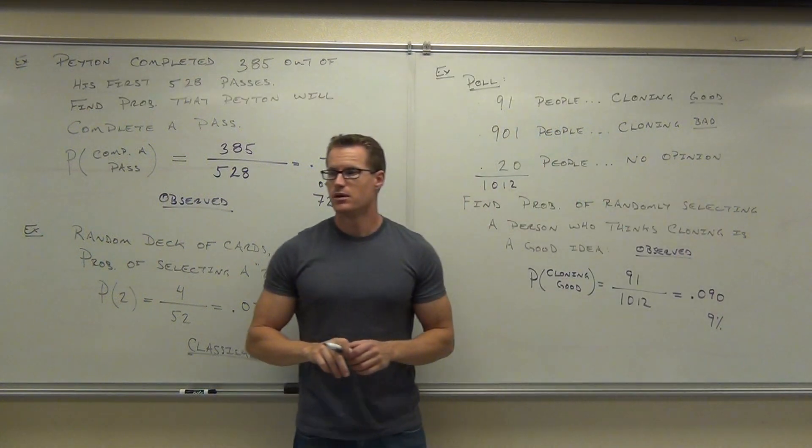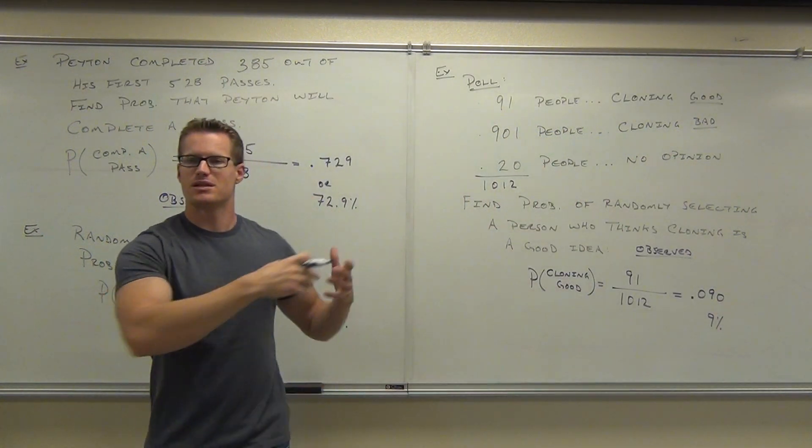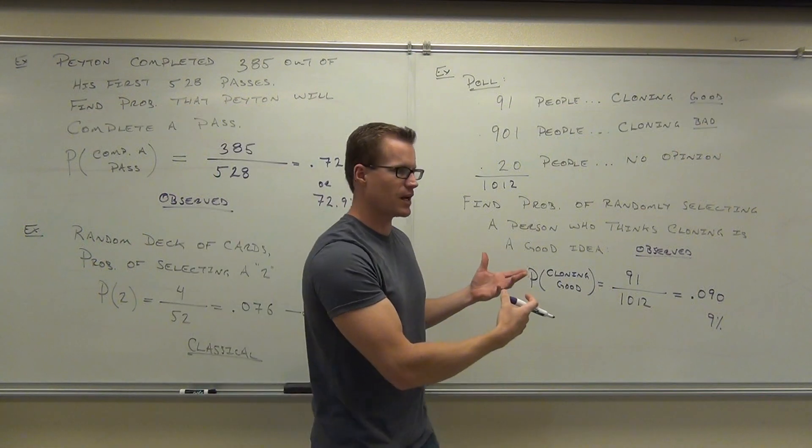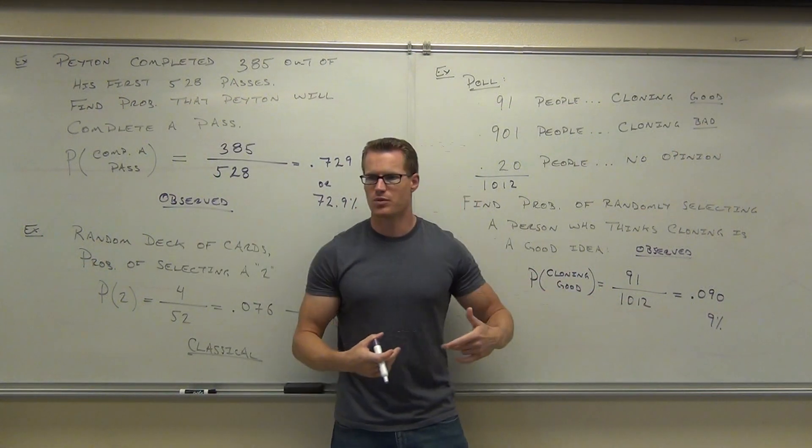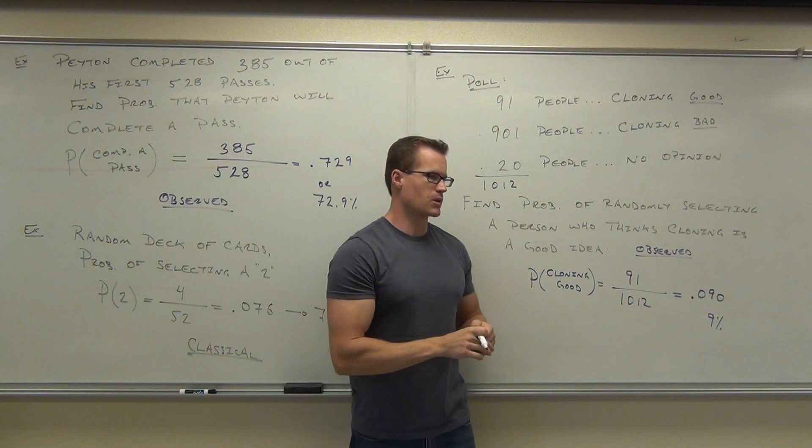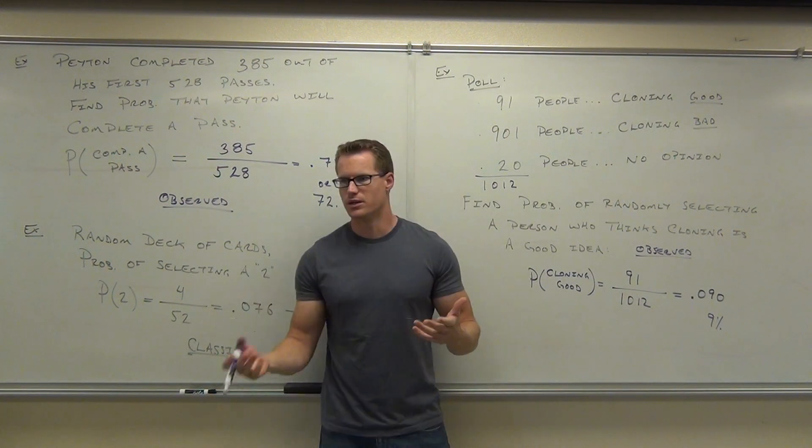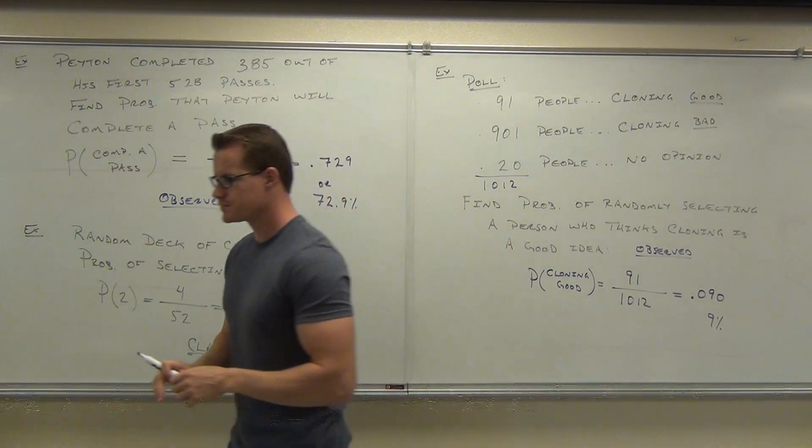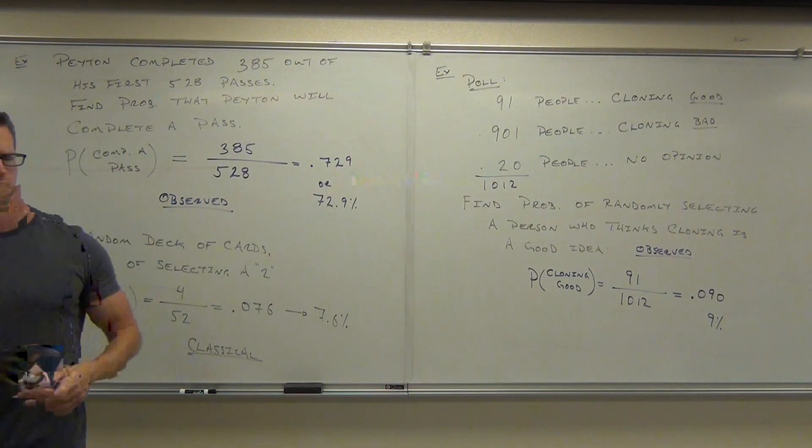So basically, nine percent. So right now, going out there, what this suggests is that randomly picking out a person, you should have a nine percent probability of getting someone who thinks cloning is a good thing. So maybe that's higher now. Who really knows? But this is a poll. But that's how you would calculate such things.